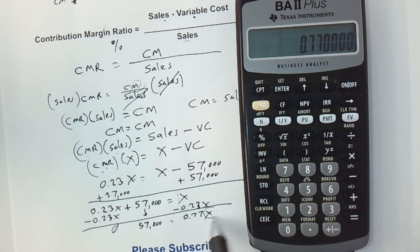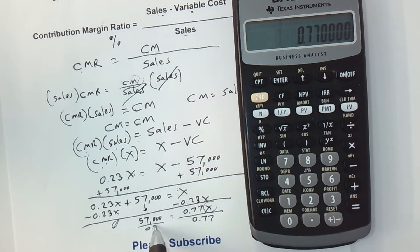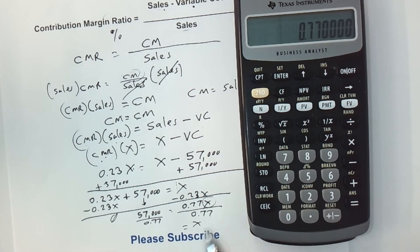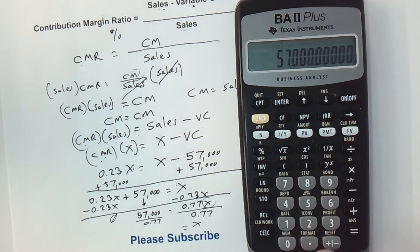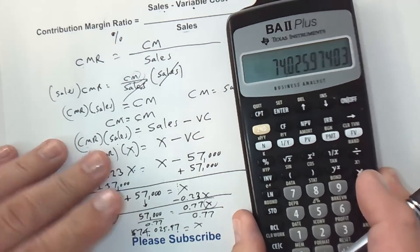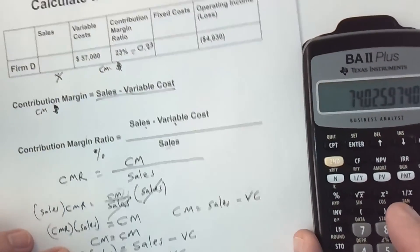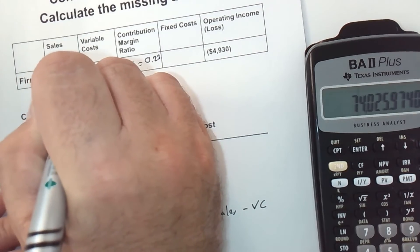The next step is to get x by itself. The relationship between 0.77 and x is multiplication, so I do the opposite and divide. Dividing both sides by 0.77: x equals 57,000 divided by 0.77, which equals $74,025.97. That is our x — which is sales. So I can put that up here: sales are $74,025.97.